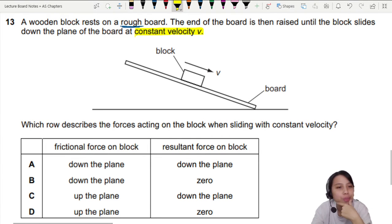First things first, let's see what they're asking us. Which row describes the forces acting on the block when it slides down at constant velocity?